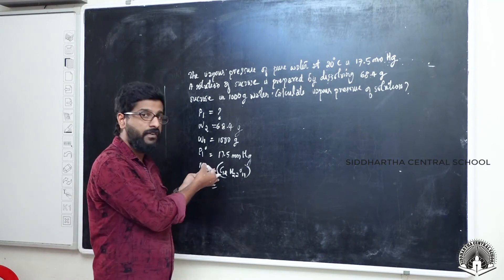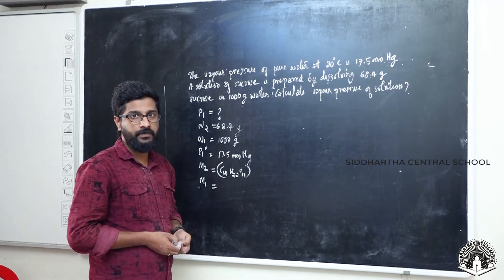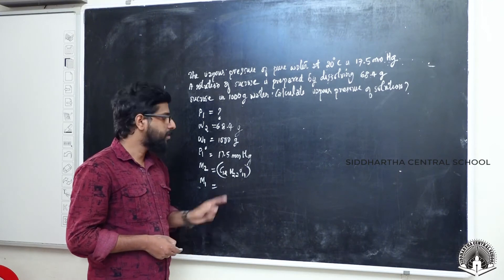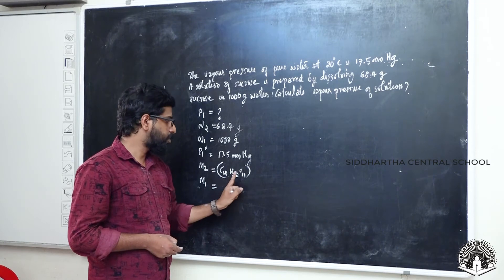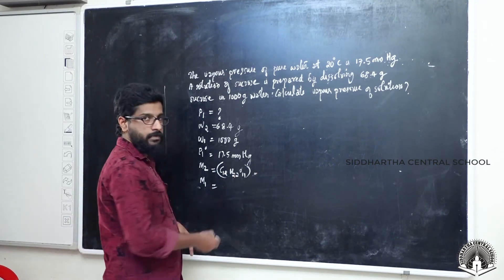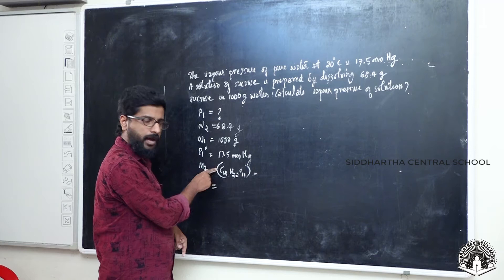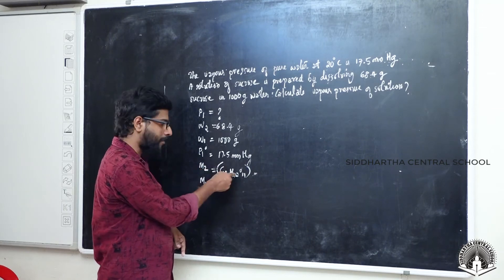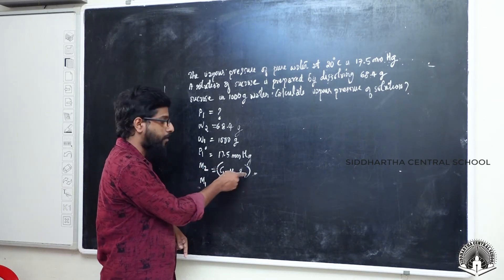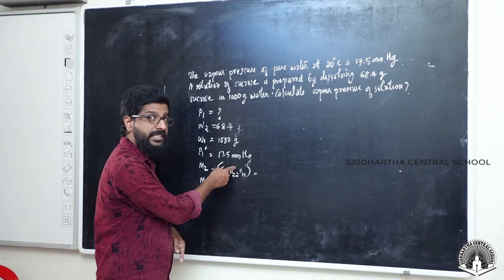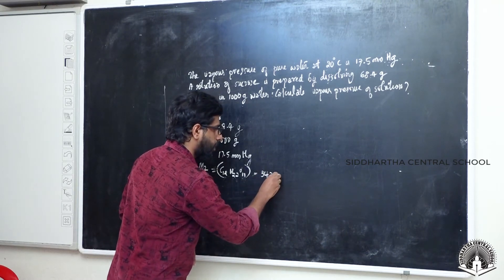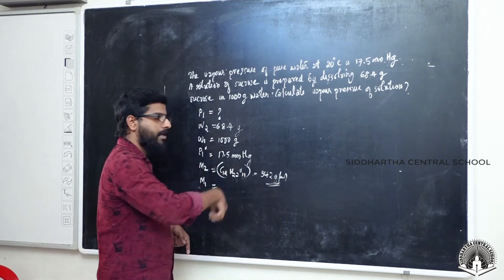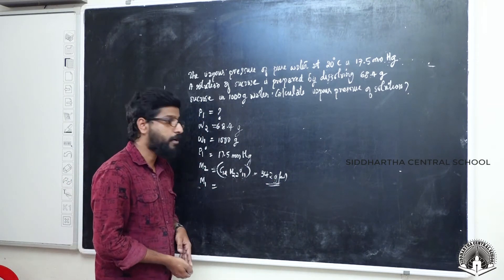We discussed these things in the first chapter — basic constitutional chemistry. The molecular formula of sucrose is C12H22O11. So the molecular mass is: 12 carbons × 12, plus 22 hydrogens × 1, plus 11 oxygens × 16. That gives us 342 grams per mole as the molecular mass of sucrose.